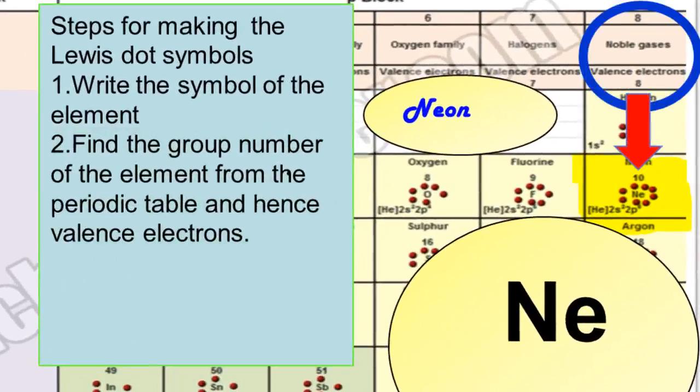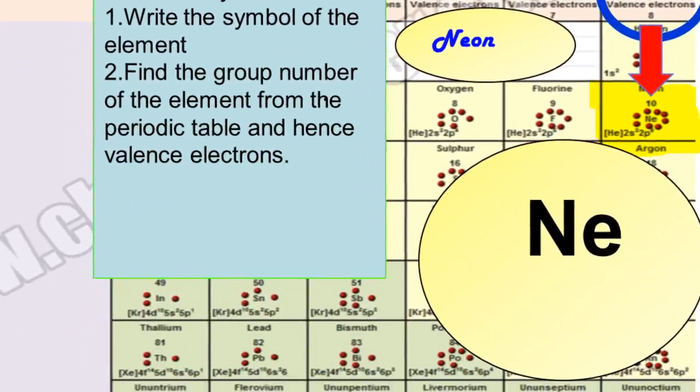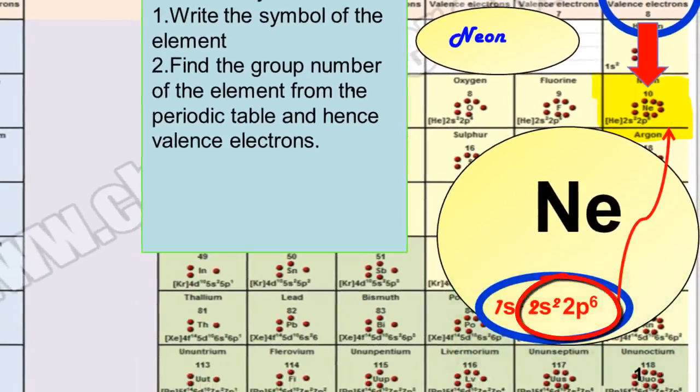Group number is 8, so its valence electrons are 8. You can also take help of the electronic configuration. The outermost shell of neon has 8 electrons, so its valence electrons are 8.